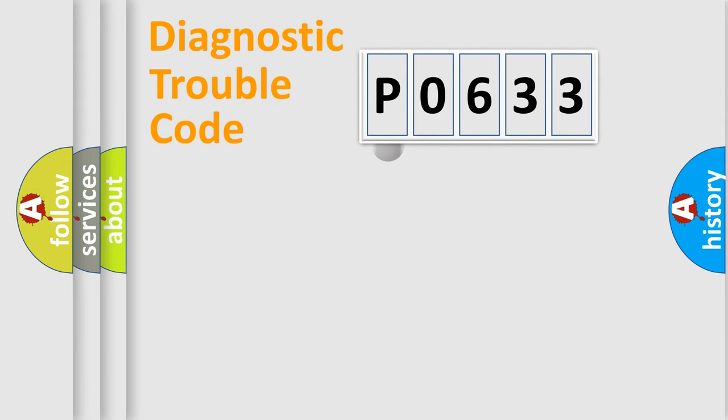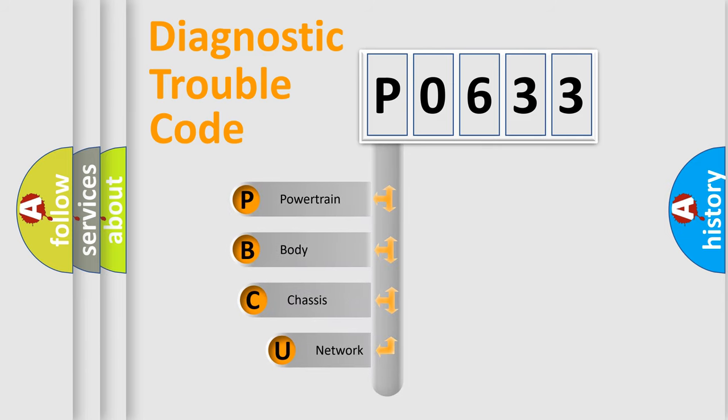First, let's look at the history of diagnostic fault code composition according to the OBD2 protocol, which is unified for all automakers since 2000. We divide the electric system of automobile into four basic units.